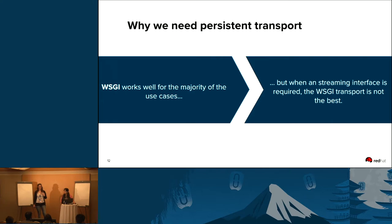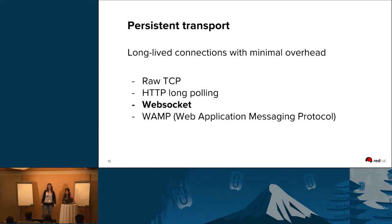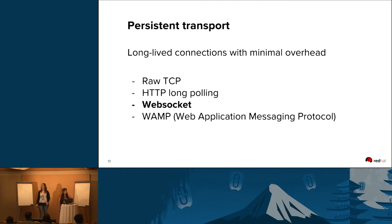We started thinking about what kind of transport would be good enough for this and considered different solutions. One alternative was raw TCP, which was almost automatically discarded because the complexity of implementing it on the server side and the client side was too high — we didn't want to reinvent the wheel. Having an implementation with raw TCP would require us and the clients to implement how the messages are transmitted, the protocol, and security over the connection. So it didn't make much sense at that time.